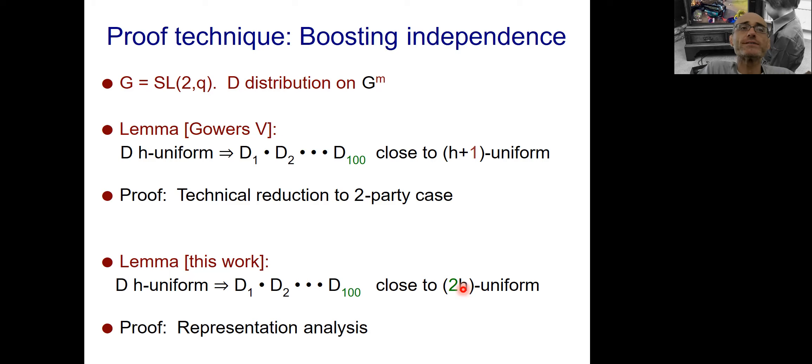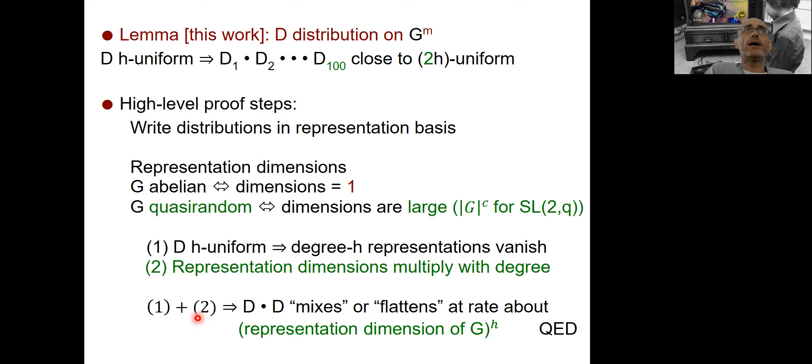And also, the second contribution is that the proof is more straightforward and is based on a representation analysis. And I'm going to have a slide on the proof ideas. So again, what we want to show is that if you have a distribution d on G to the power m, so m tuples of the group, if d is h uniform, then if you multiply or convolve a large by constant number of these distributions, you get a distribution which is twice as much uniform, so 2h uniform. And here are the high-level proof steps.